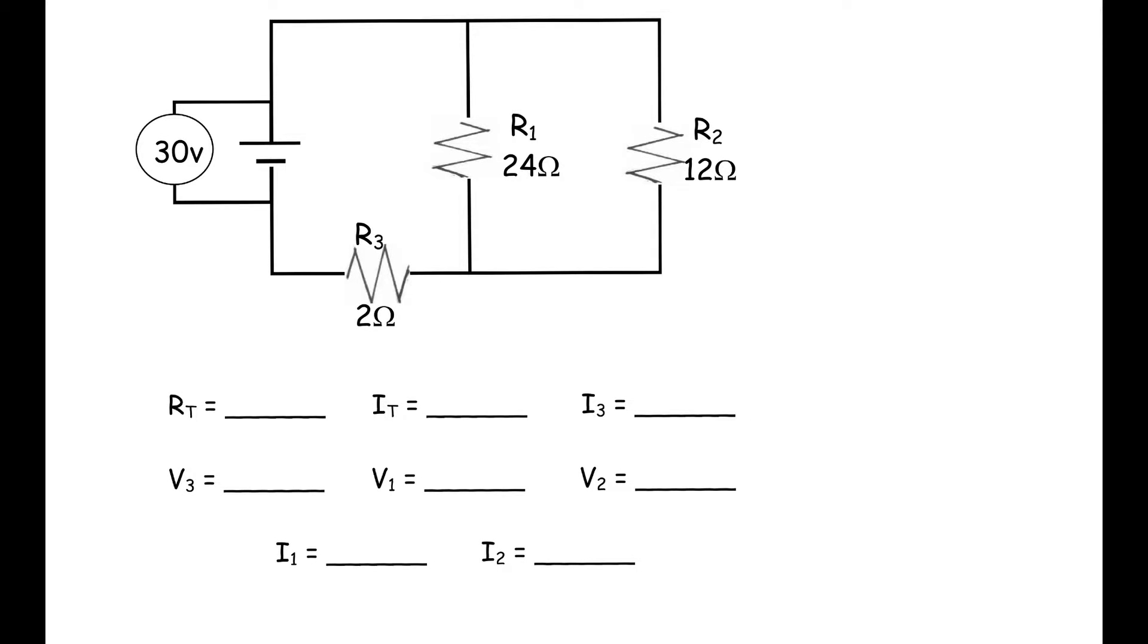Starting out with the total resistance, we're going to combine these two in parallel, and then add that to this one which is in series. So we've got 24 and 12. It starts out as 1 over 12 plus 1 over 24. We must have a common denominator, so we're going to change this to 2.